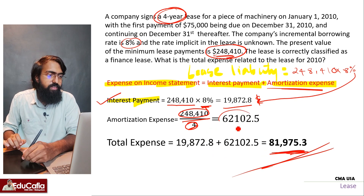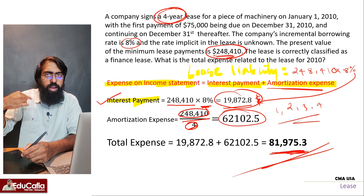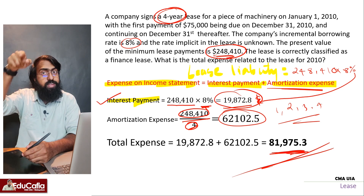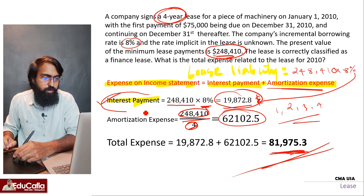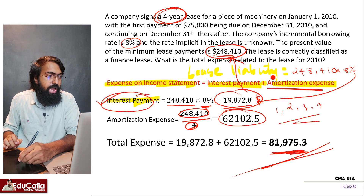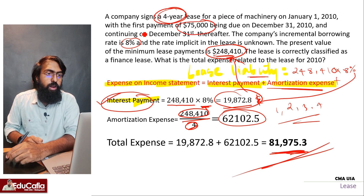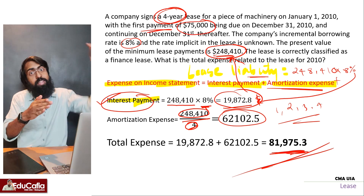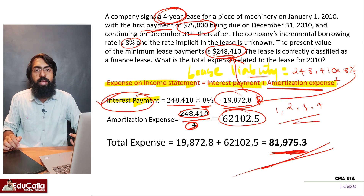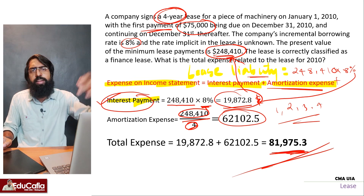It's the same for the first year, second year, third year, fourth year. But if we discuss this expense, the interest payment gets added to the liability side. You give this interest payment and you give the first payment, and so on for each period.